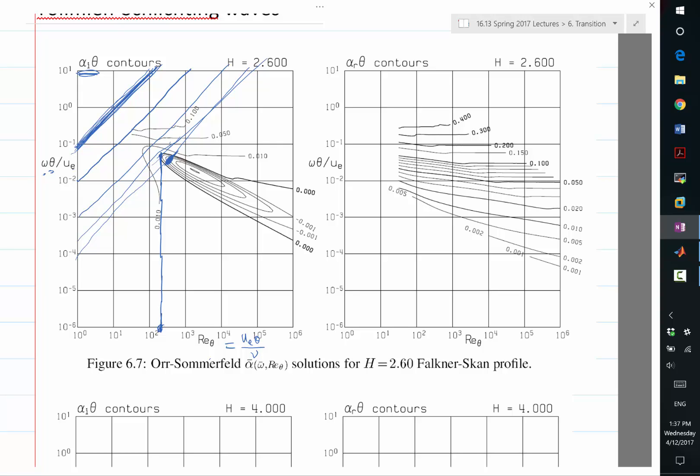Maybe enough to trigger transition. Maybe that is enough for the instability waves to grow from a thousandth of the free-stream velocity to a hundredth of the free-stream velocity, which may be enough to trigger the secondary instability and you have transition to turbulence. But if the Reynolds number is lower, what happens?